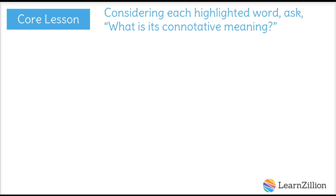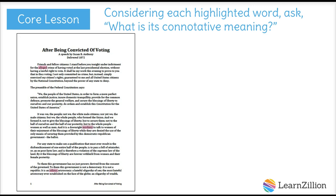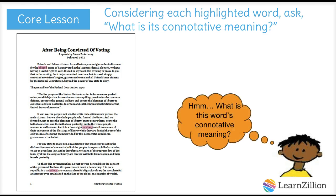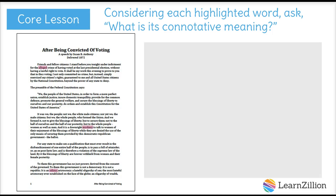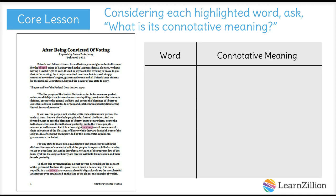So now we have to think about these words, as the second step is to consider each highlighted word and ask: What is its connotative meaning? An easy way for me to organize my thinking about this is to create a simple T-chart. I want to write 'word' in the first column and 'connotative meaning' in the other. The first part is done for me. I have already identified words that created or elicited a response when I was reading. I am going to quickly jot these words down under the heading 'word.' Now comes the tricky part — the thinking and reflecting part. I have to think about the connotative meaning of each word. What did this word make me feel as I was reading?